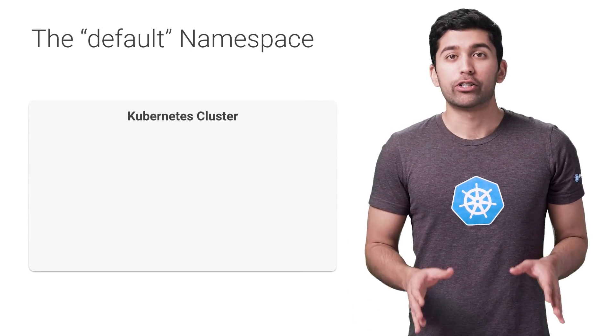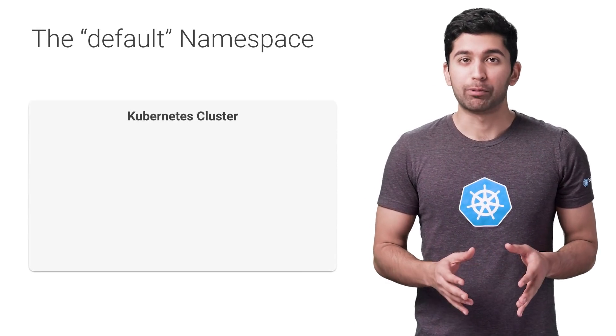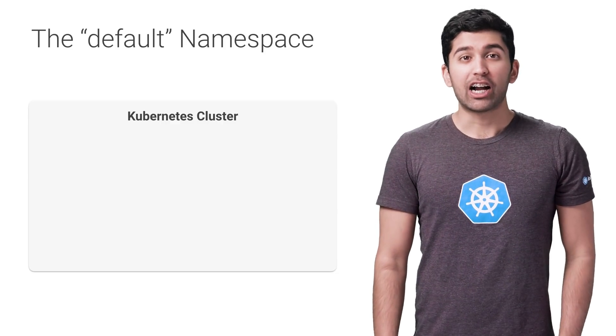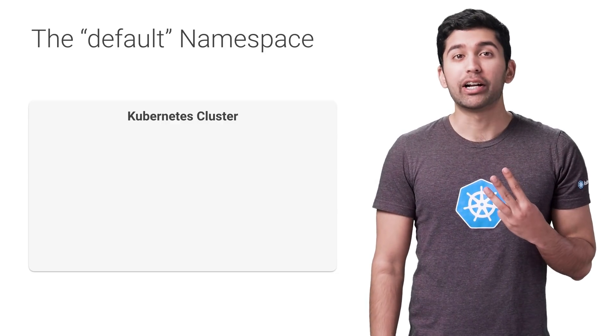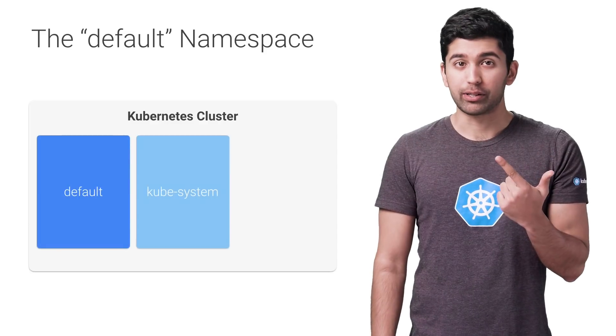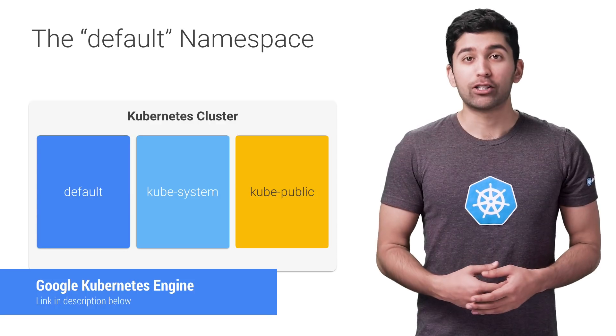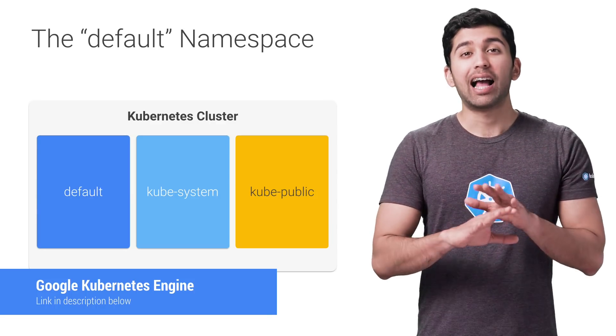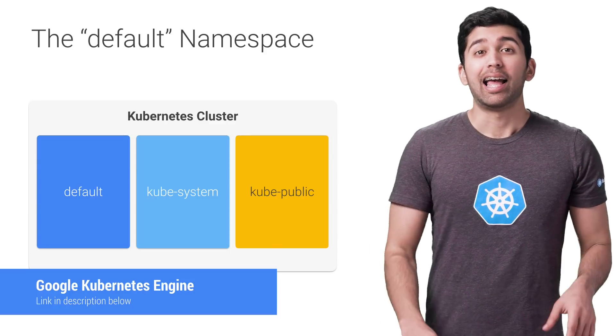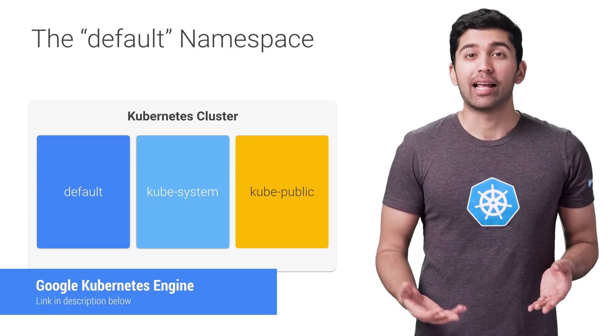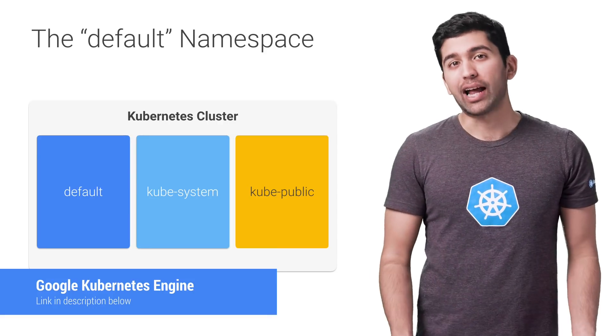In most Kubernetes distributions, the cluster comes out of the box with a namespace called default. In fact, there are actually three namespaces that Kubernetes ships with: default, kube-system, and kube-public. kube-public really isn't used for much right now, and it's usually a good idea to leave kube-system alone, especially in a managed system like Google Kubernetes Engine. This leaves the default namespace as the place where your services and apps are created. There's nothing special about this namespace, except that the Kubernetes tooling is set up out of the box to use this namespace, and you can't delete it.